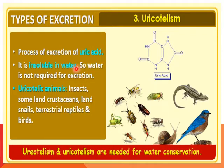Urotelism and uricotelism are needed for water conservation because they require moderate or no water for excretion, whereas ammonia requires excess water for excretion and occurs in aquatic animals. In terms of toxicity, ammonia is the most toxic waste product, urea is less toxic, and uric acid is the least toxic.